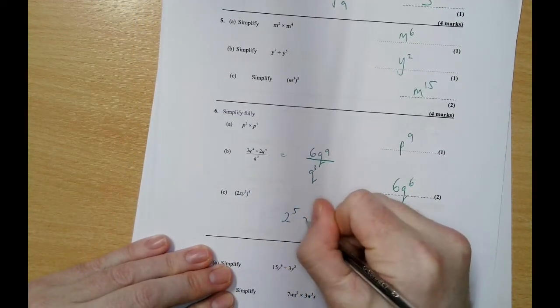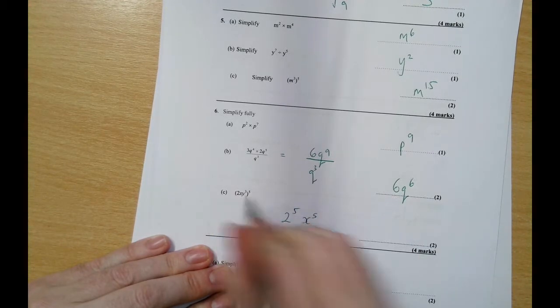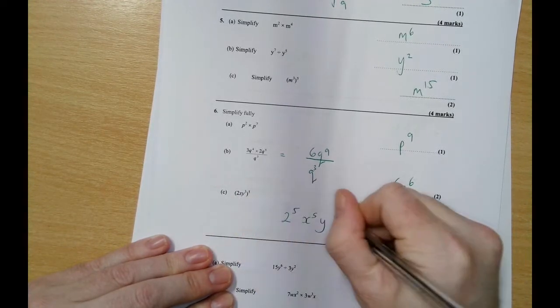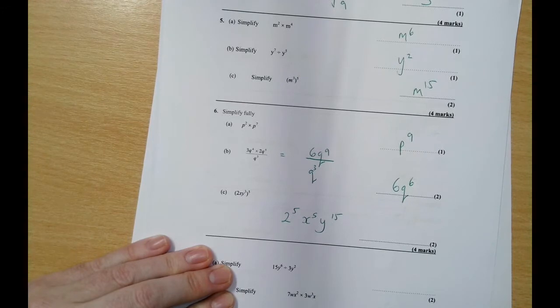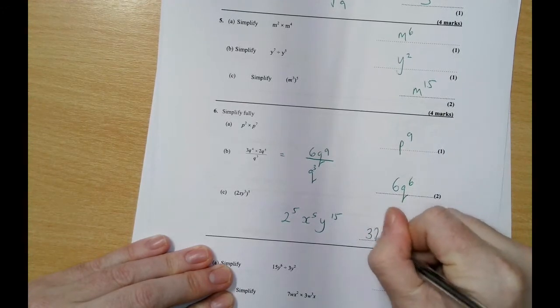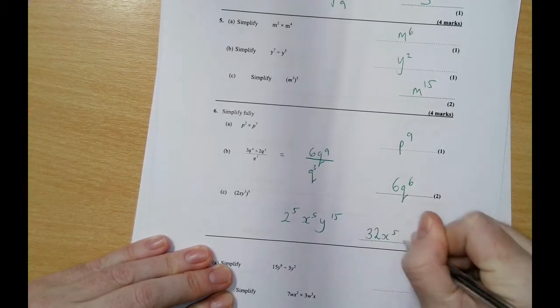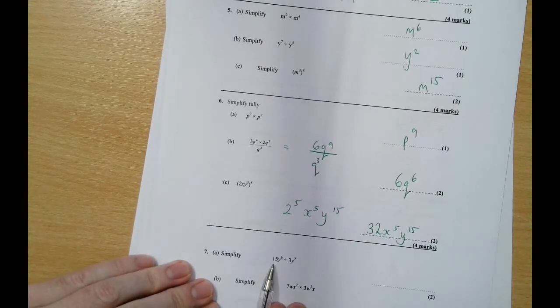With this one for c, you could just say it's going to be 2 to the power of 5, x to the power of 5 because that's just 1, and then y to the power of 15. But we would have to answer the 2 to the power of 5 bits. 2 to the power of 5 is 32, x to the power of 5, y to the power of 15.